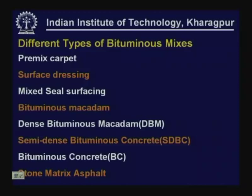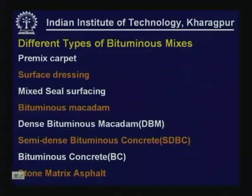There are different types of bituminous mixes — some thin, some thick, with different aggregate gradations and characteristics used for specific purposes. These include premixed carpet, surface dressing, and mastic surfacing, which are thin bituminous surfacing courses of about 20–25 mm thickness. Bituminous macadam, dense bituminous macadam, and semi-dense bituminous macadam are usually adopted for binder courses.